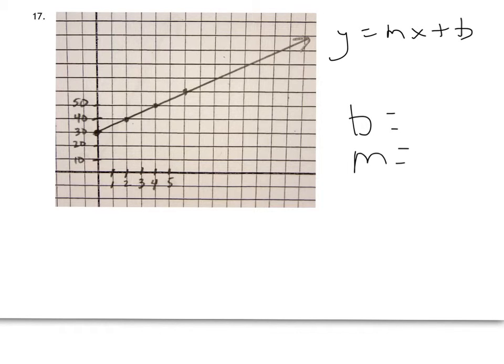Looking at my y-axis it intercepts at 30. Clearly right there the number 30. So I know that b is 30. The initial value. Initial means starting point.